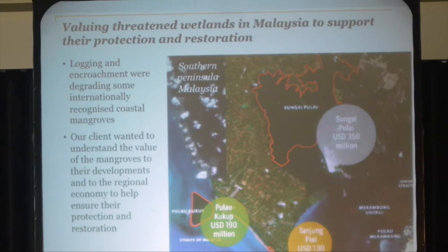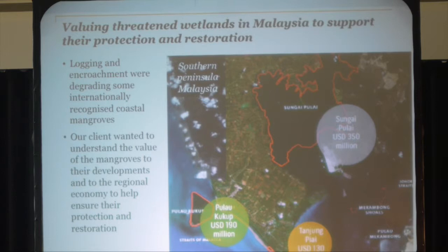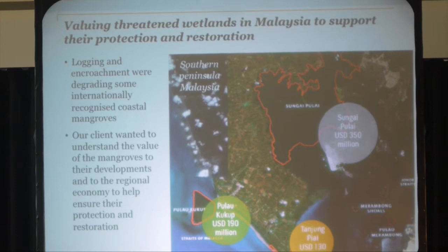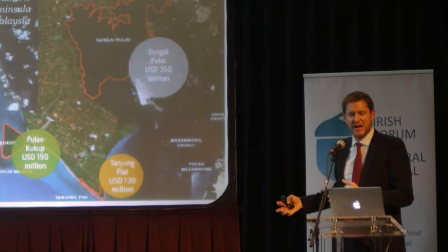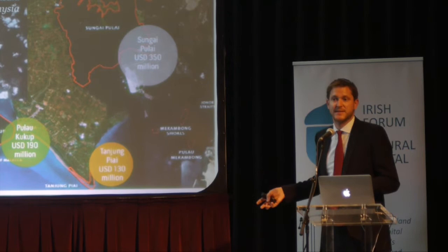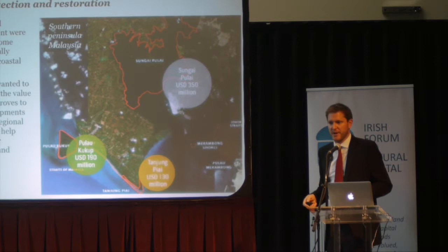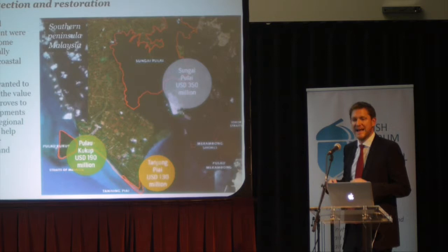The first example — one of the few cases where an economist like me gets to tramp around in some wetlands in Malaysia. This is Southern Peninsula Malaysia, near Singapore. These are important Ramsar wetland sites. We were asked by a developer developing a big region there who had become conscious that the degradation of the mangroves — which they don't own or control — was threatening their business and the economy of the region. They didn't have any numbers to put on that, so they asked us to assess the value of these sites to the regional economy and to them as a developer.